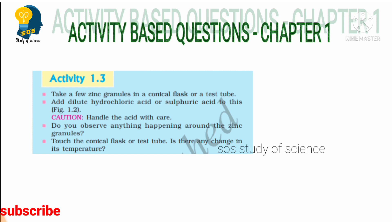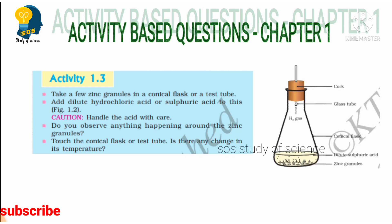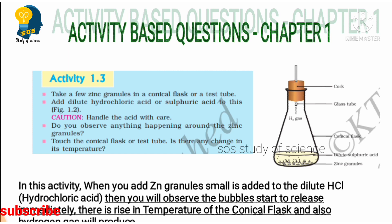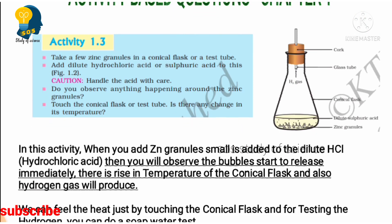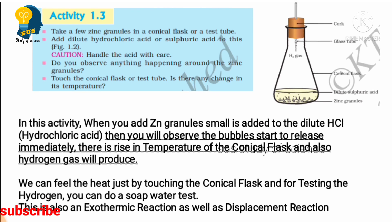If we look at Activity 1.3: take a few zinc granules in a conical flask or a test tube, then add dilute hydrochloric acid or sulfuric acid to this. When we drop the zinc granules into the dilute hydrochloric acid, you can observe that bubbles immediately start to release from the solution, because zinc is reacting with the dilute hydrochloric acid.